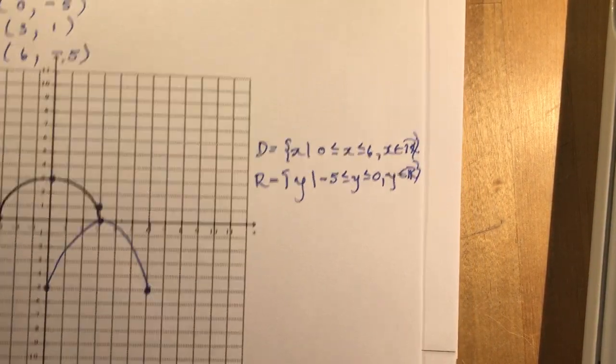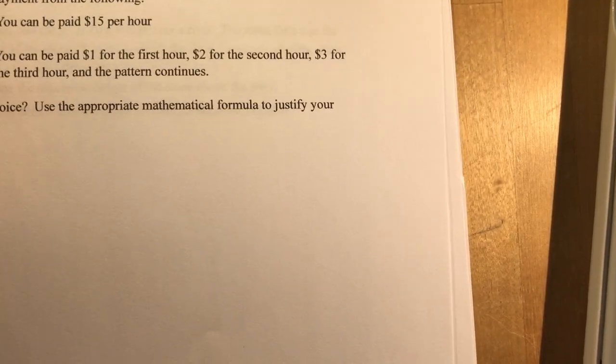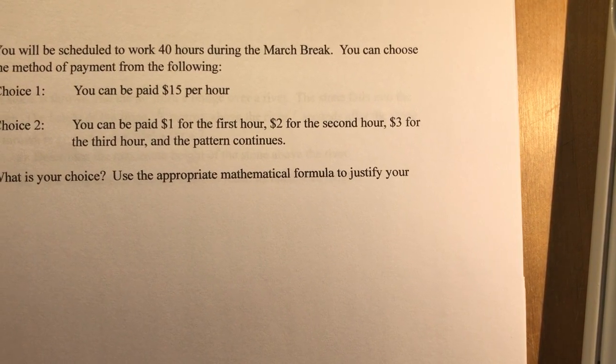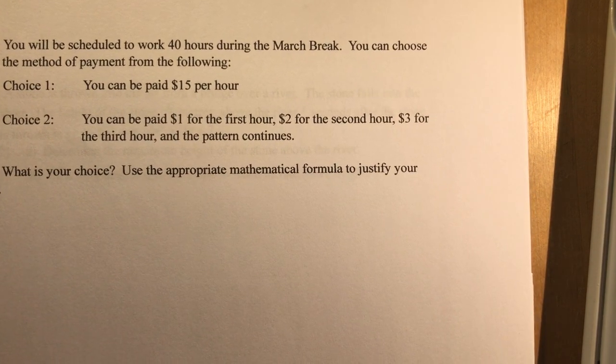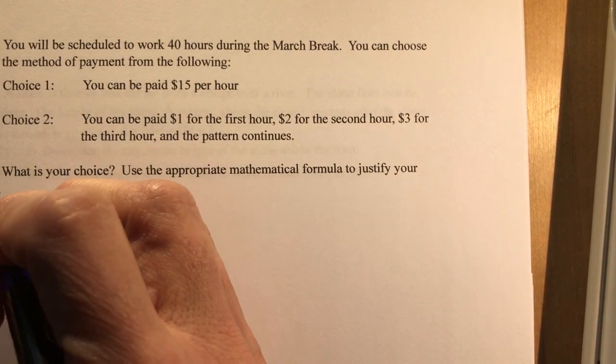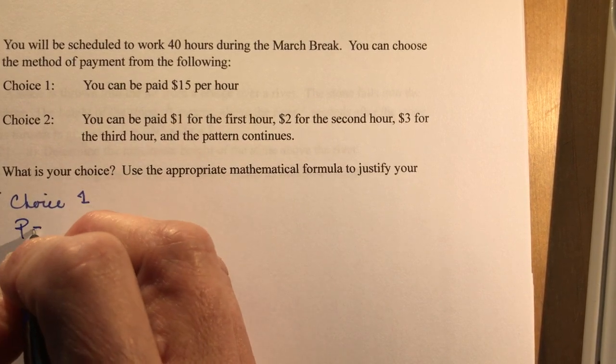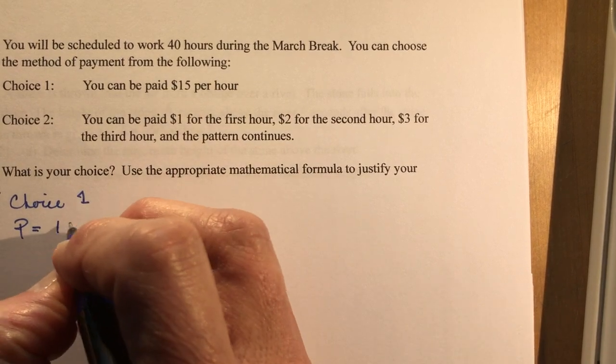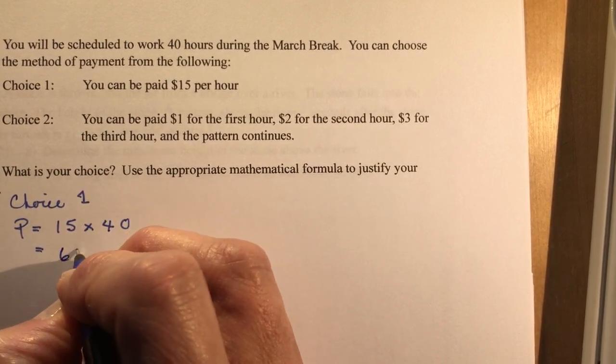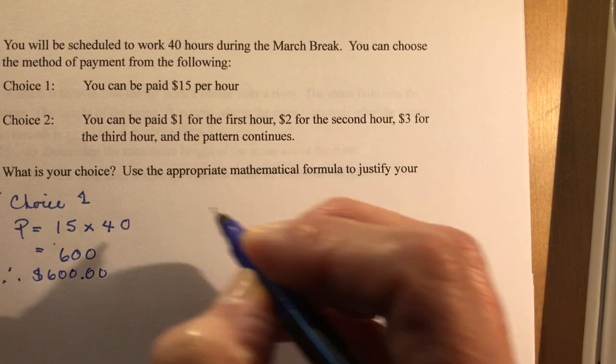Number 6. It says you will be scheduled to work 40 hours during the March break. You can choose the method of payment from the following. You can be paid $15 per hour. Let's just figure out what you're going to make if you make $15 an hour. Choice 1: $15 an hour. So P is your payment. P is going to be 15 times 40 hours. That's going to give you $600.